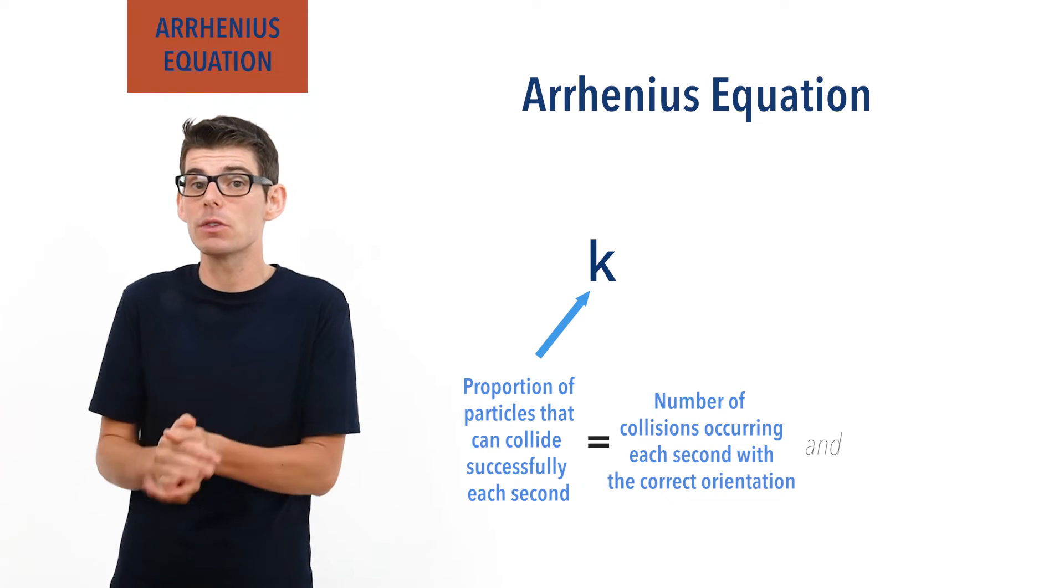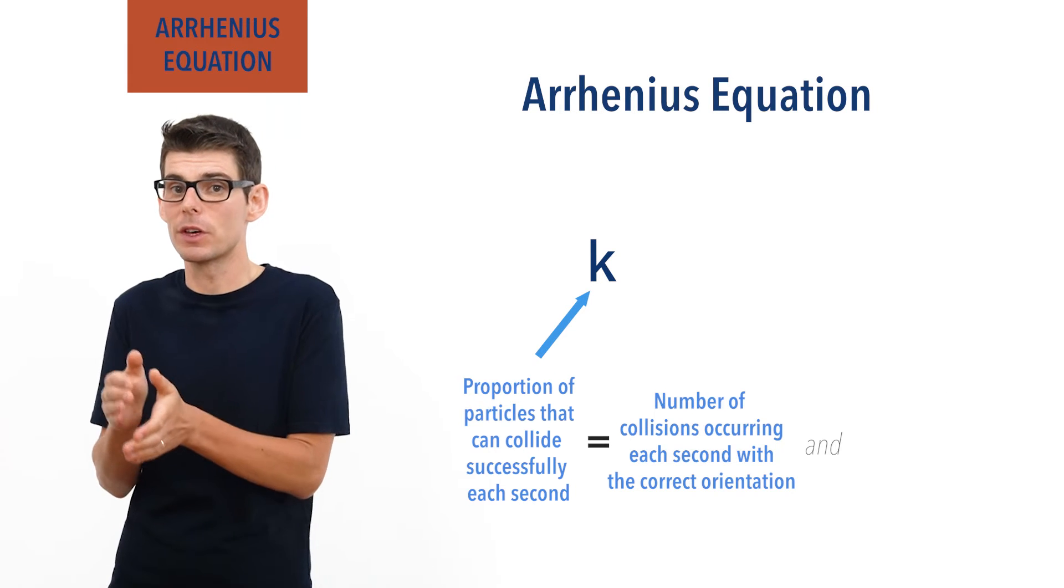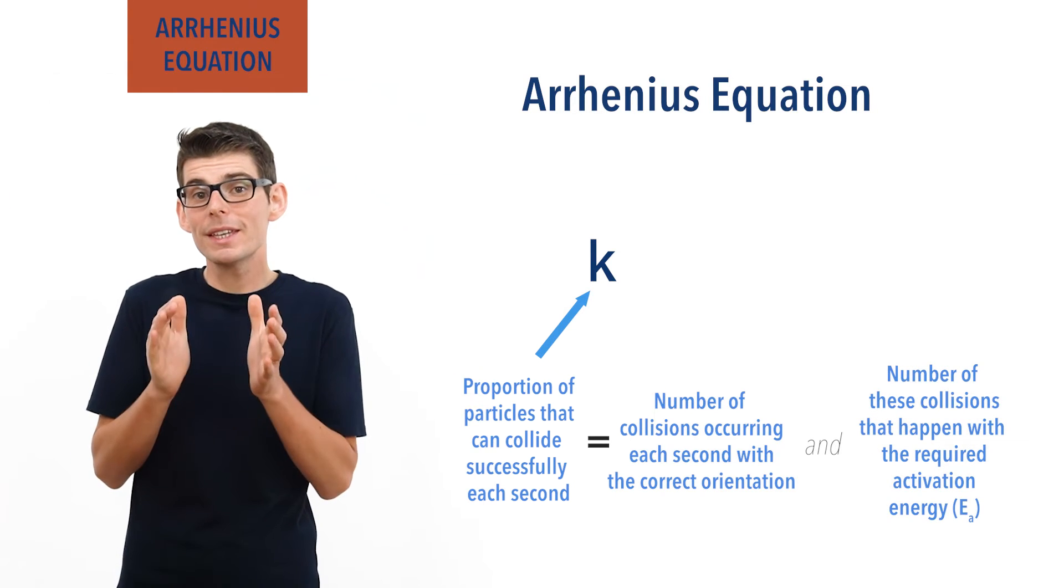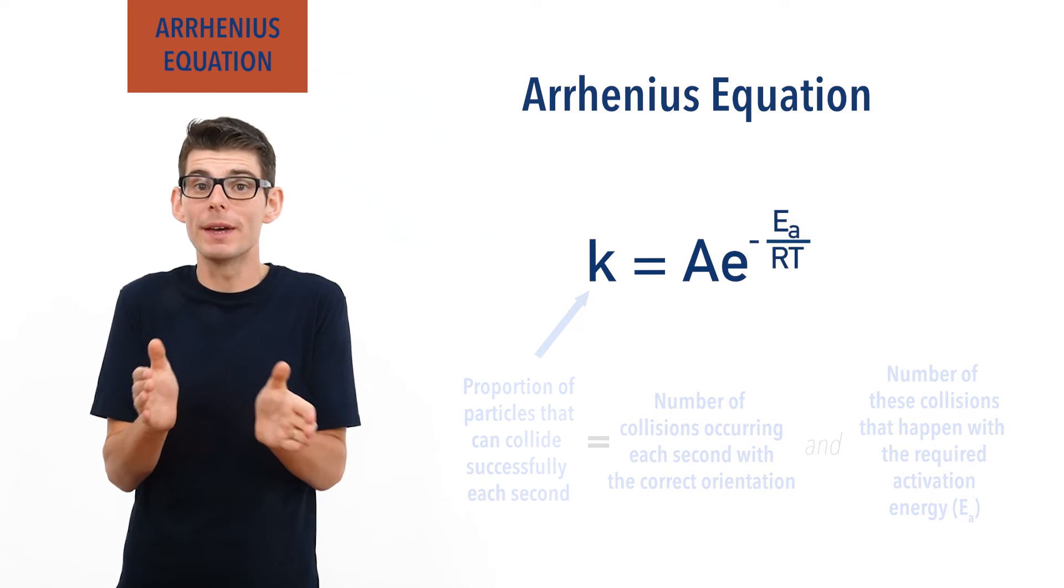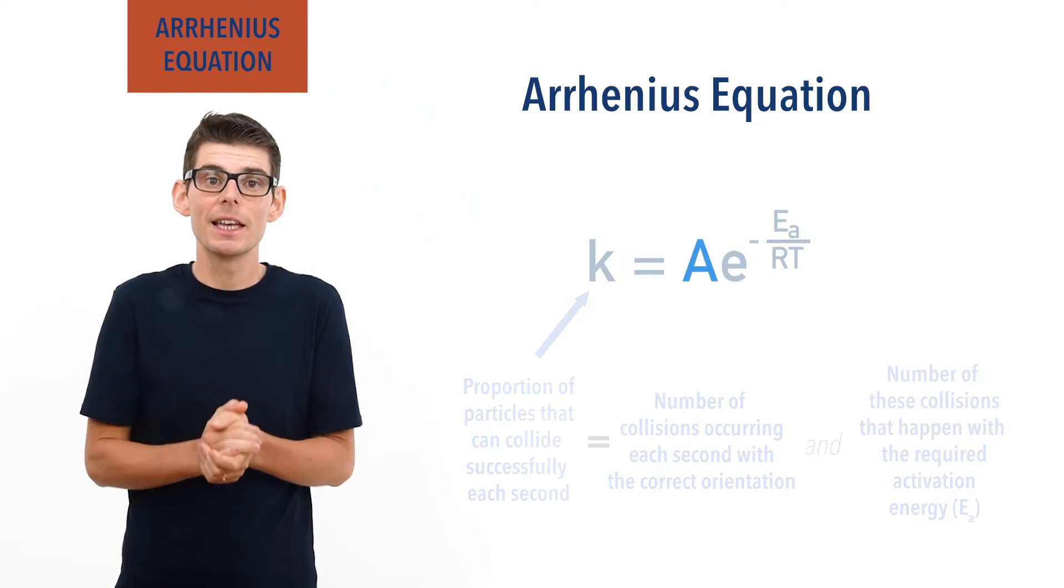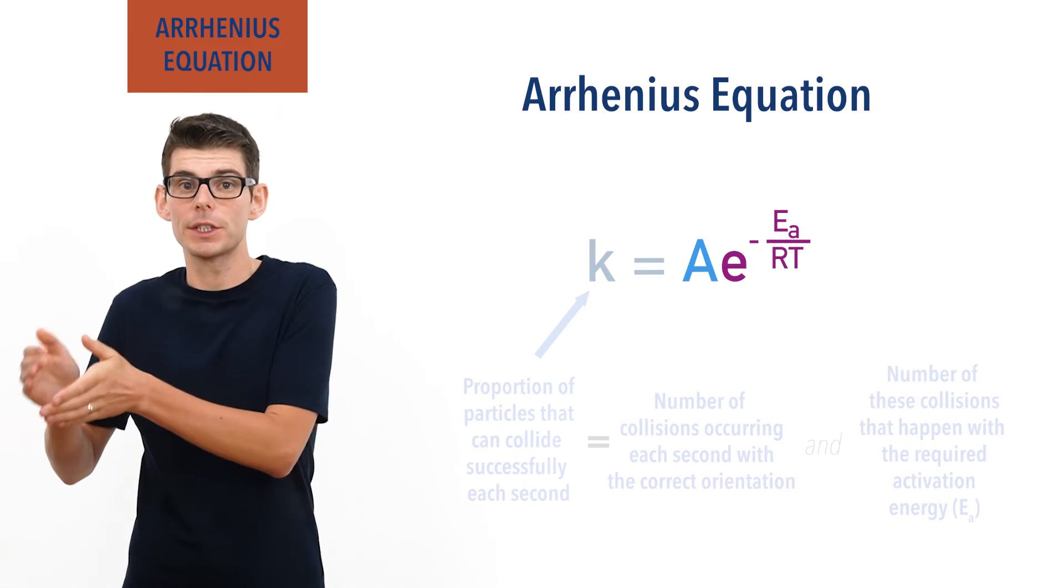And the number of these collisions that have the required activation energy. We can see this within the Arrhenius equation - there are actually two main sections to it: A, and e to the power minus Ea over RT.